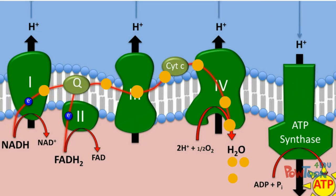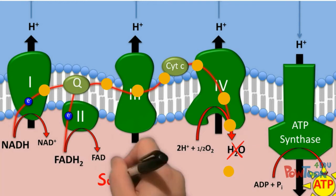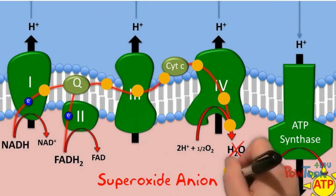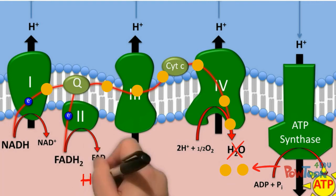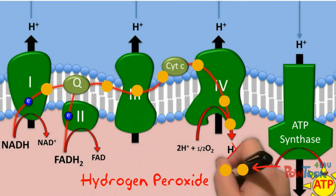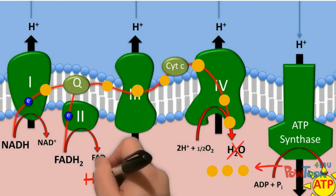Aside from ATP, water is produced by way of complex 4. But if electrons leak from the mitochondrial membrane, oxygen may not be able to receive the 4 electrons it needs to form water. If oxygen only receives 1 electron, a free radical is formed called the superoxide anion. If 2 electrons are taken by oxygen, then hydrogen peroxide is produced, and if 3 electrons, then a hydroxyl radical is formed.